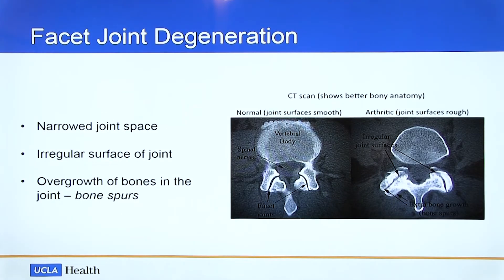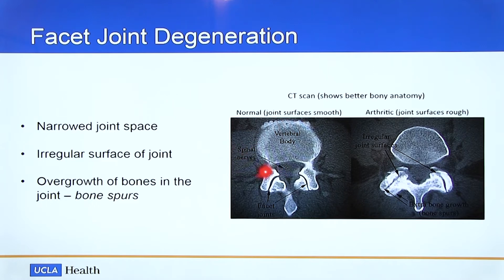I want to show you what a normal facet looks like. This is an example of a normal facet on a CAT scan — the facet joint is well preserved and the surface of the bone is rather smooth. With arthritis, the facet joint narrows, and the bone surface lining the joint becomes irregular and jagged. Furthermore, the bones that make up the facet joint grow larger. That extra bone that develops as a result of arthritis is called a bone spur, and it is a common manifestation of arthritic changes in joints, including the facet joint.